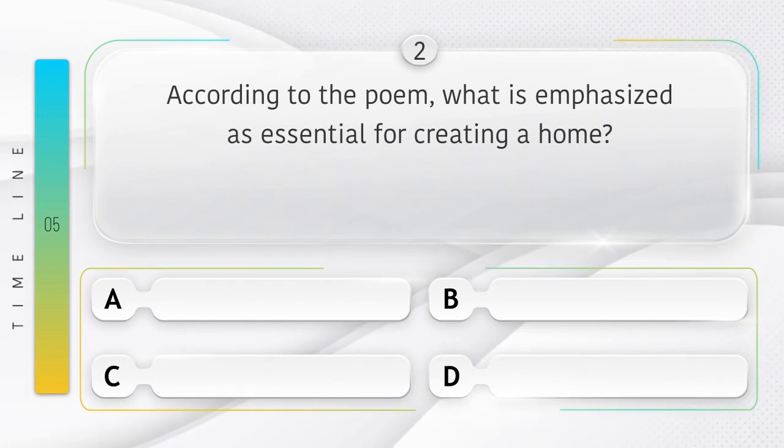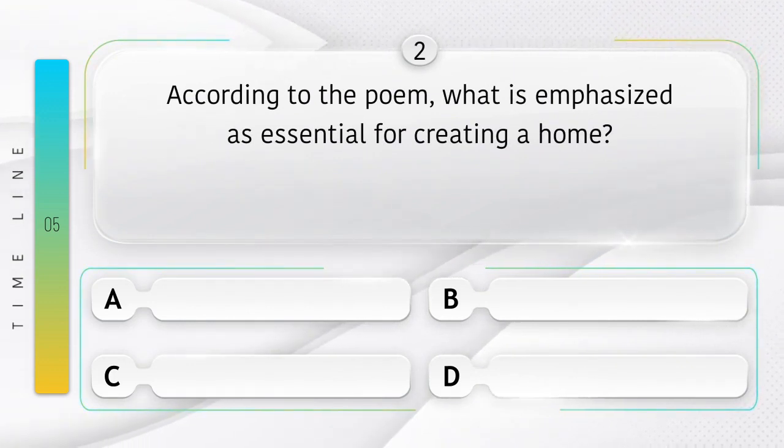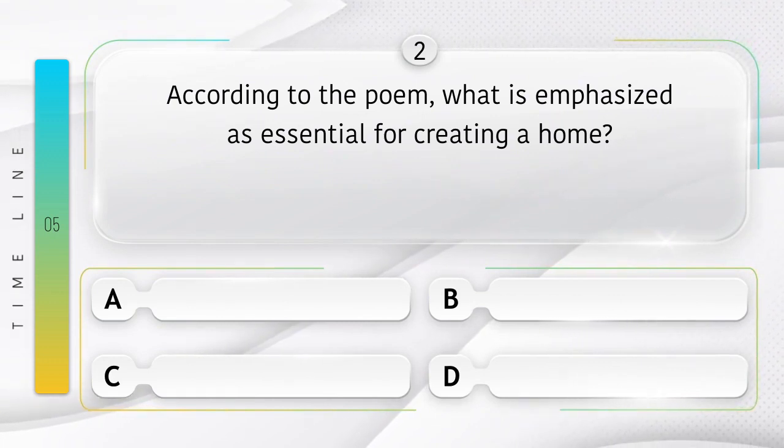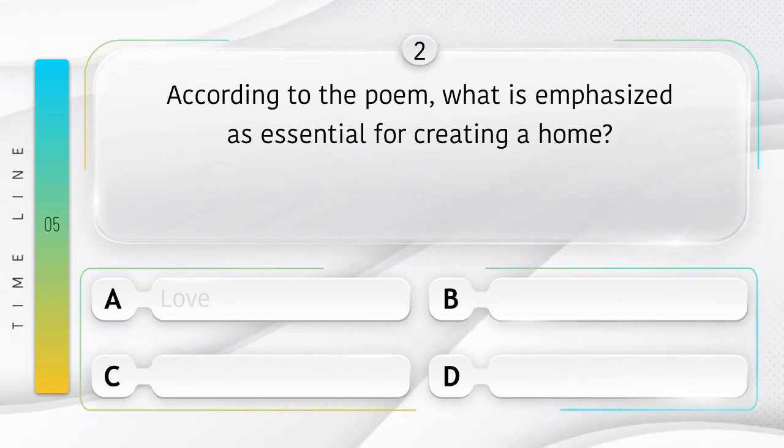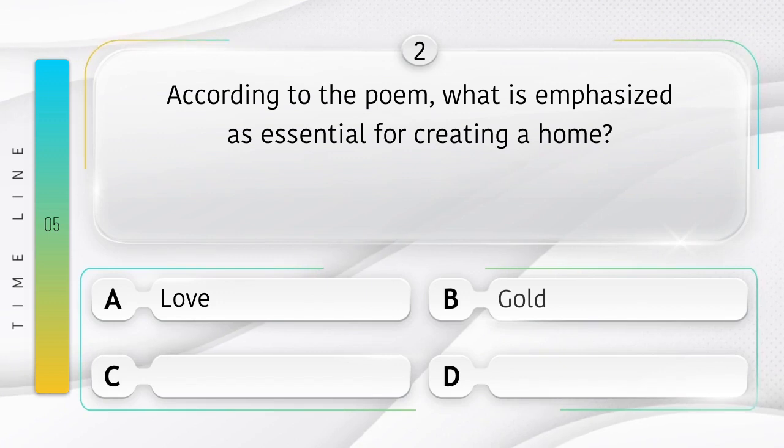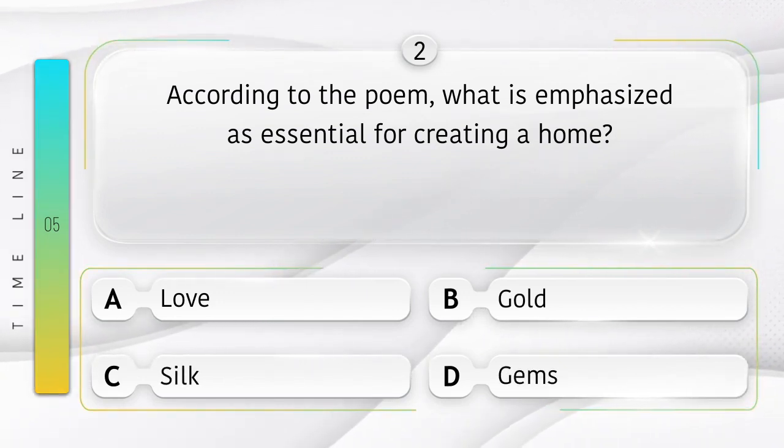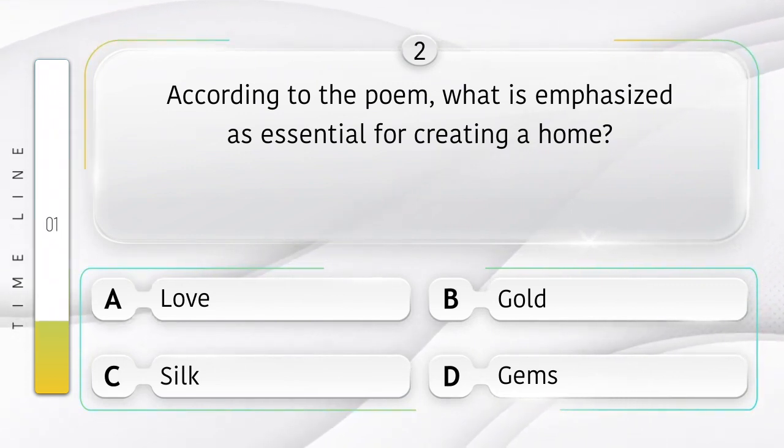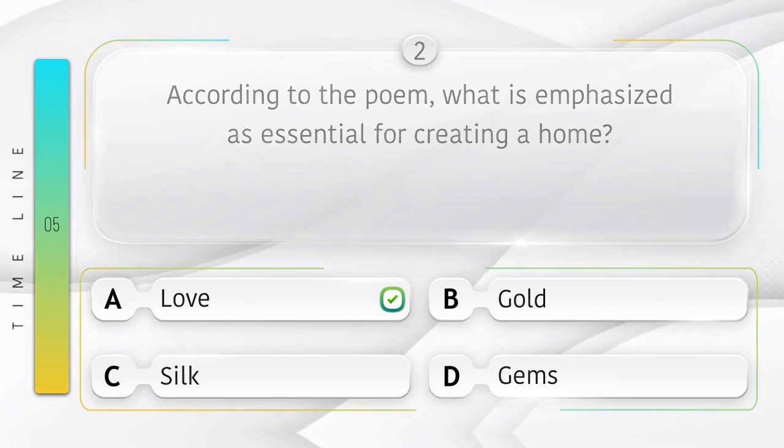According to the poem, what is emphasized as essential for creating a home? The options are A. Love, B. Gold, C. Silk, D. Gems. Answer is option A, Love.